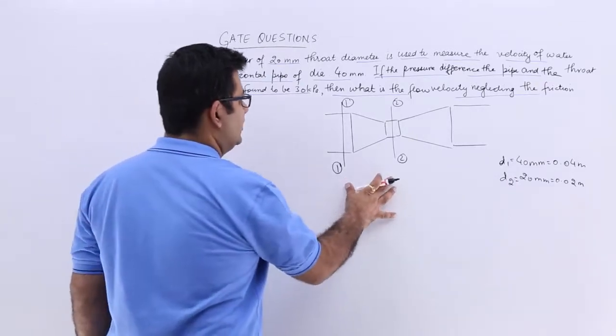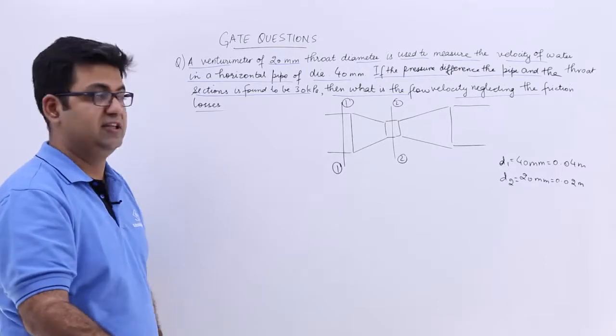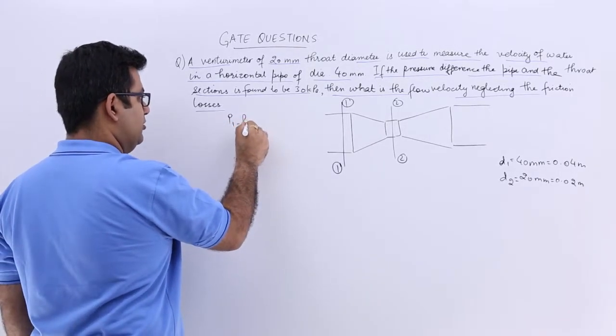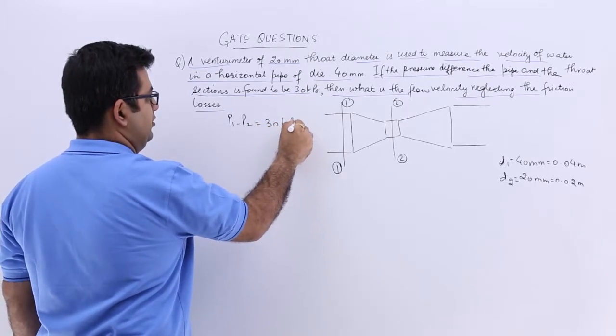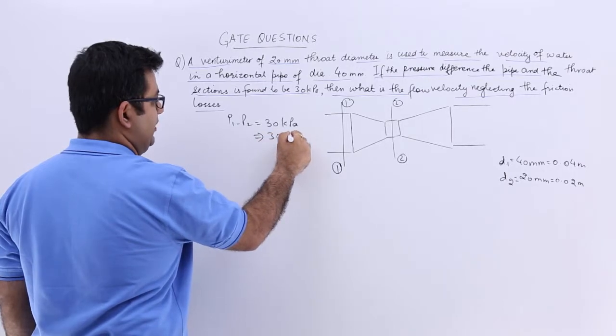Now the difference between these two is 30 kilopascals, that is P1 minus P2. This is not the pressure head. So you will have P1 minus P2 as 30 kPa, so that will become 30,000 pascals.